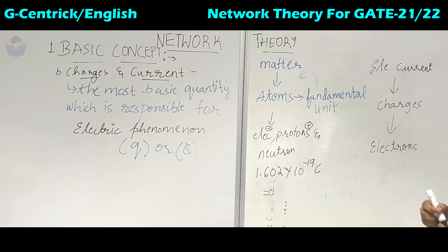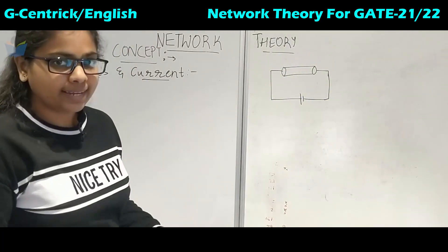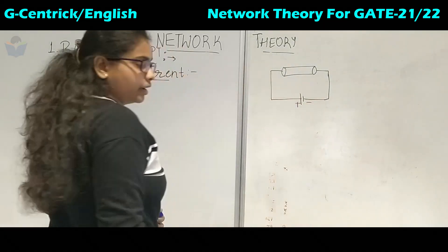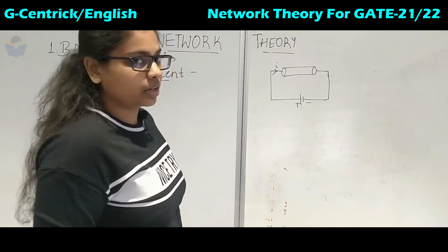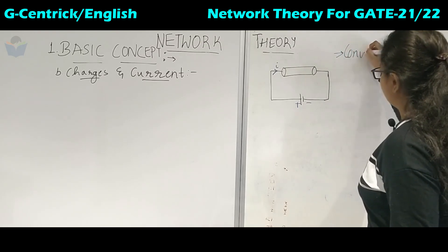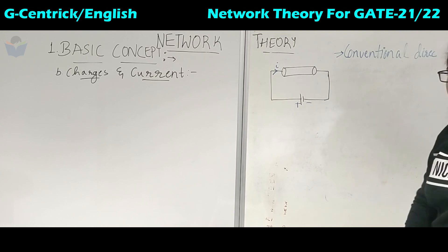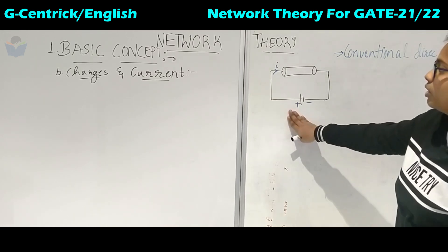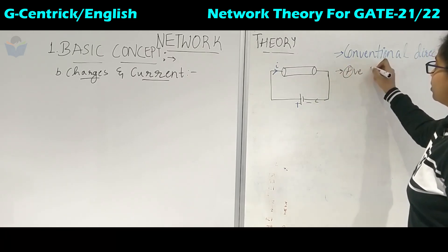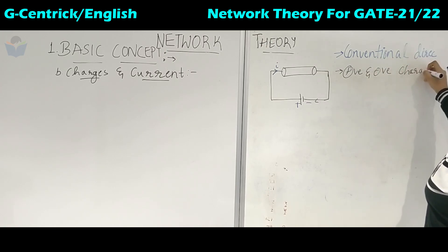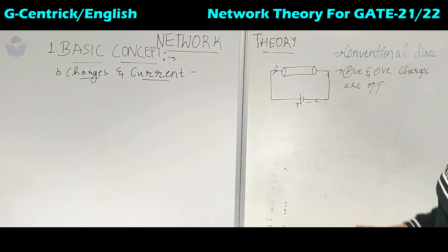Before going into the definition, we will understand how current flows in an electric circuit. If you take a circuit with a positive terminal and a negative terminal, the current flows from positive to negative. This assumed direction is called the conventional direction, which was given by Benjamin Franklin. According to this conventional direction, current always flows from the positive terminal to the negative terminal.